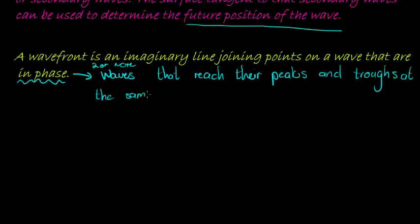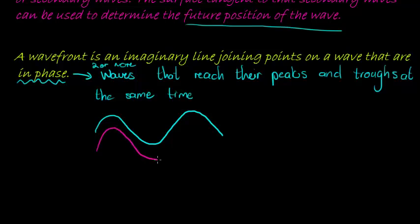We looked at that when we were talking about constructive interference — reaching peaks and troughs at the same time. So if I draw two waves here, wave one and wave two, you notice that when this one is at its peak, this one is at its peak; when this one has its trough, this one has its trough. So these are waves that are in phase.